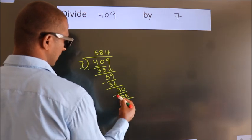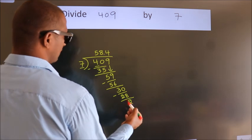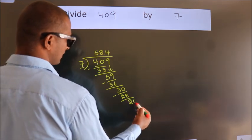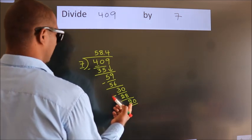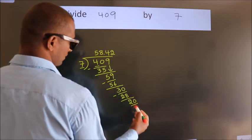Now we subtract. We get 2. After this, we already have the decimal, so directly take 0. So 20. A number close to 20 in 7 table is 7 twos, 14.